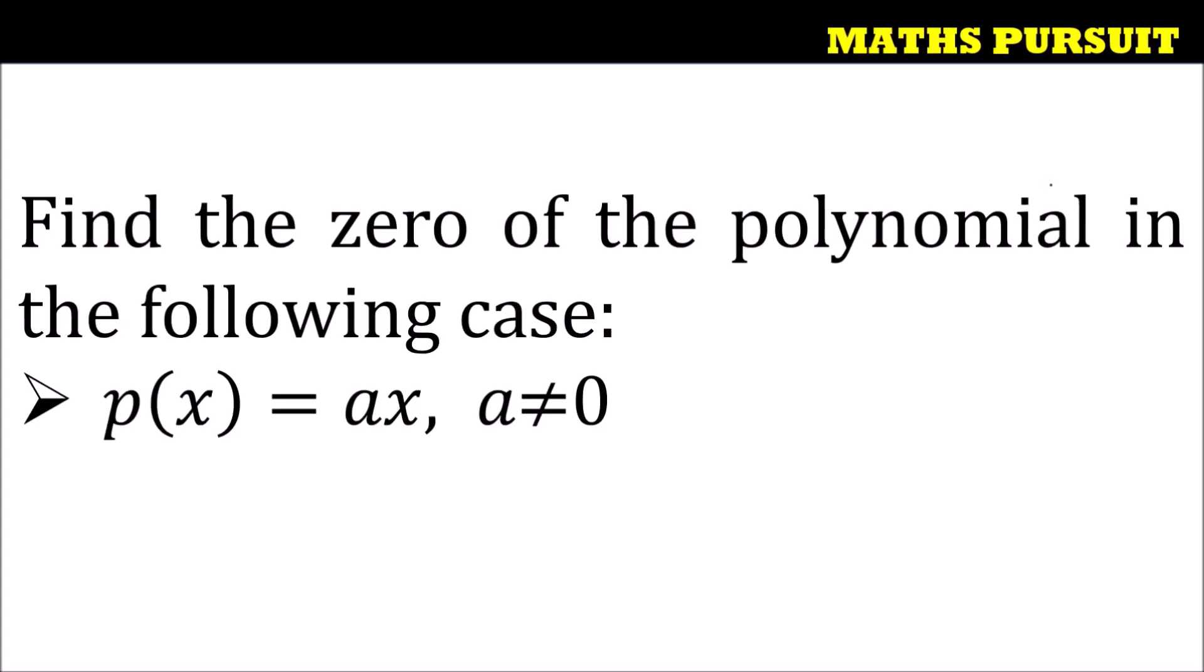The given question is find the zero of the polynomial in the following case and the given polynomial is p(x) is equal to ax where a is not equal to zero.